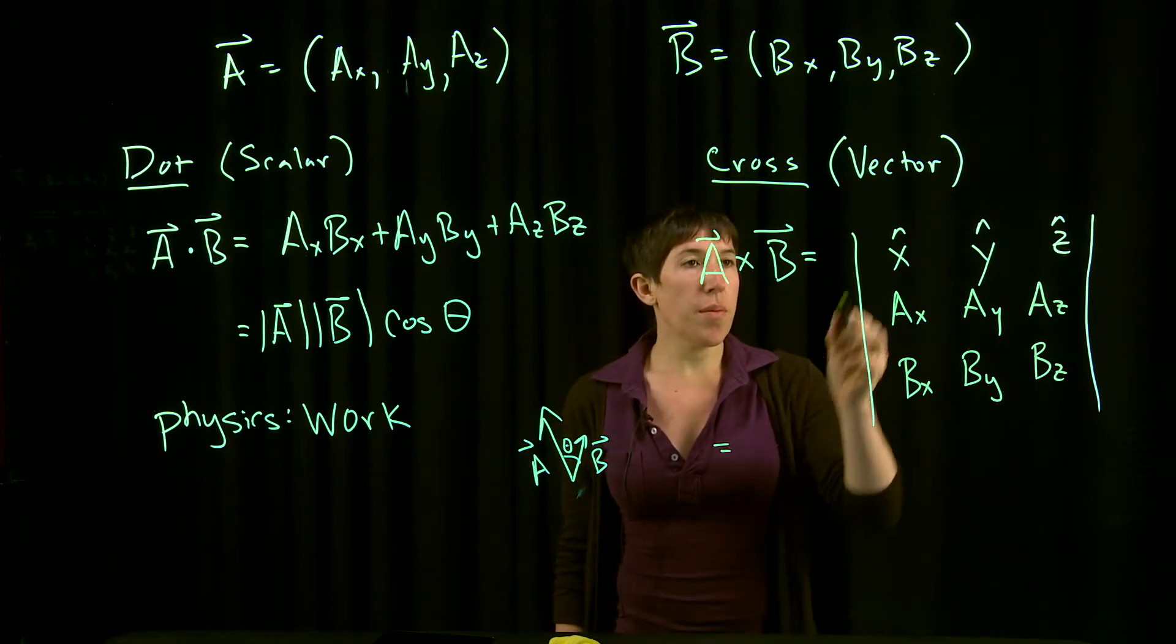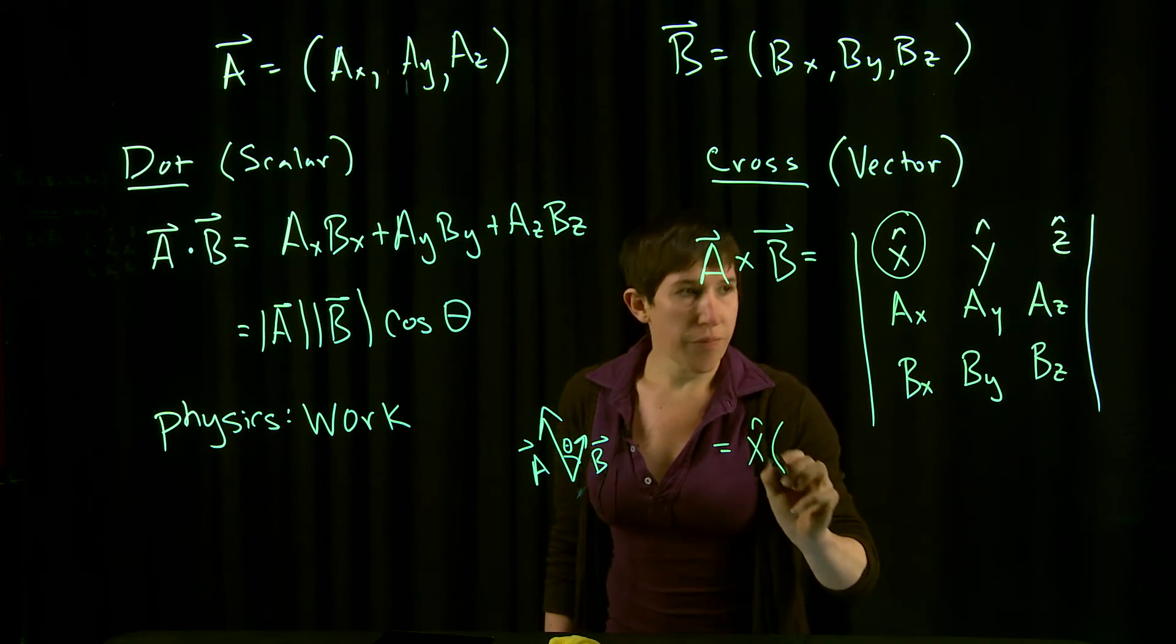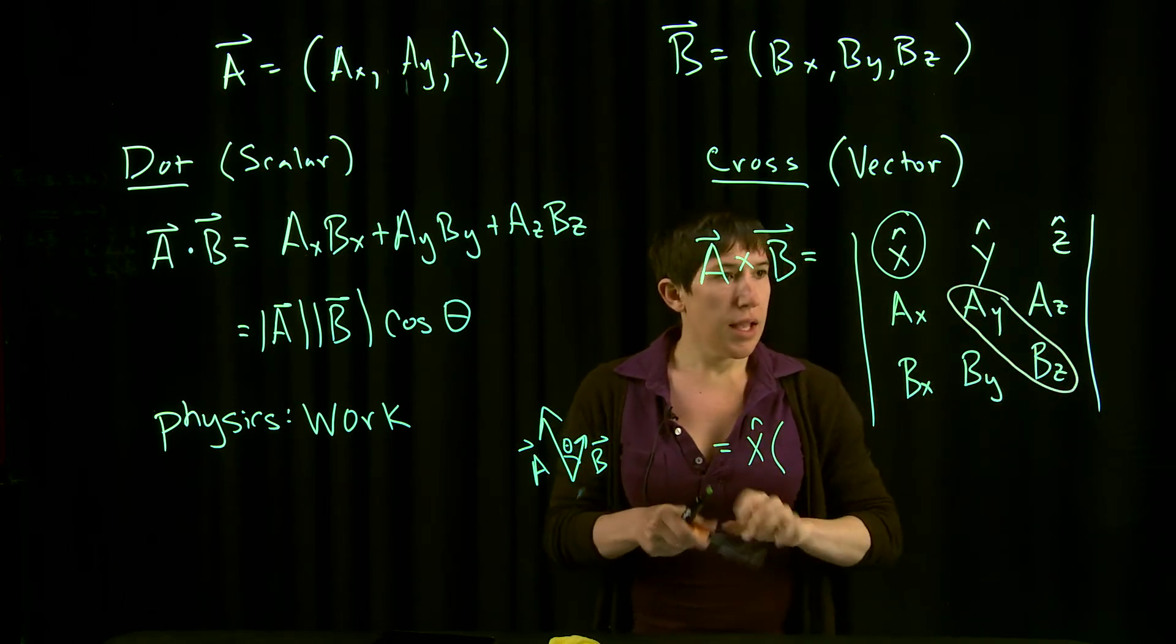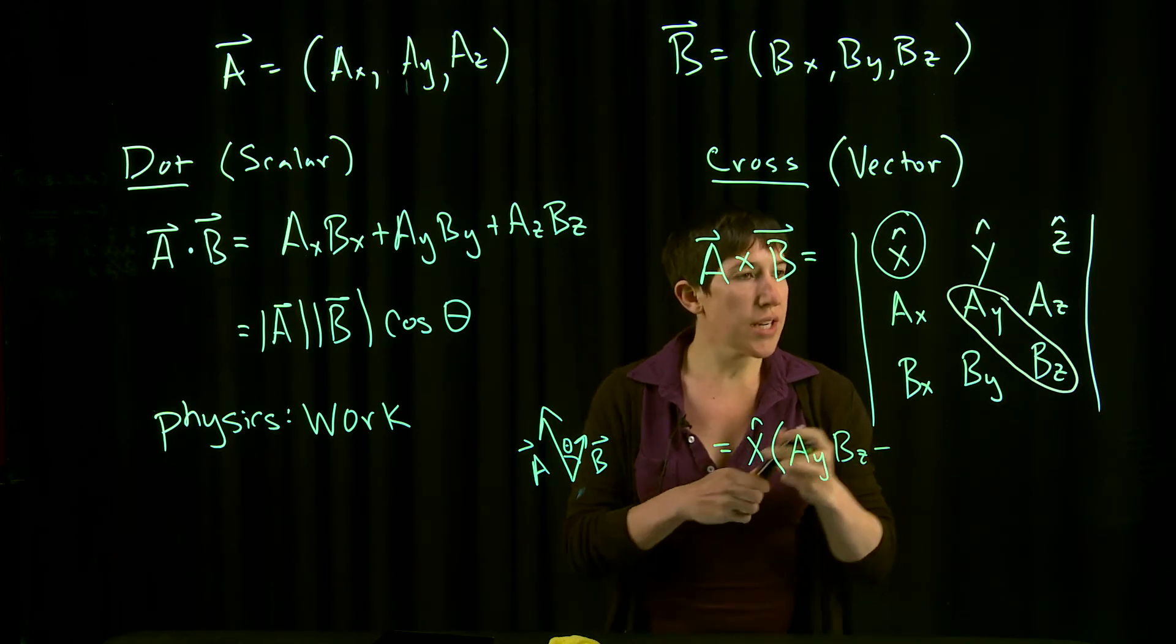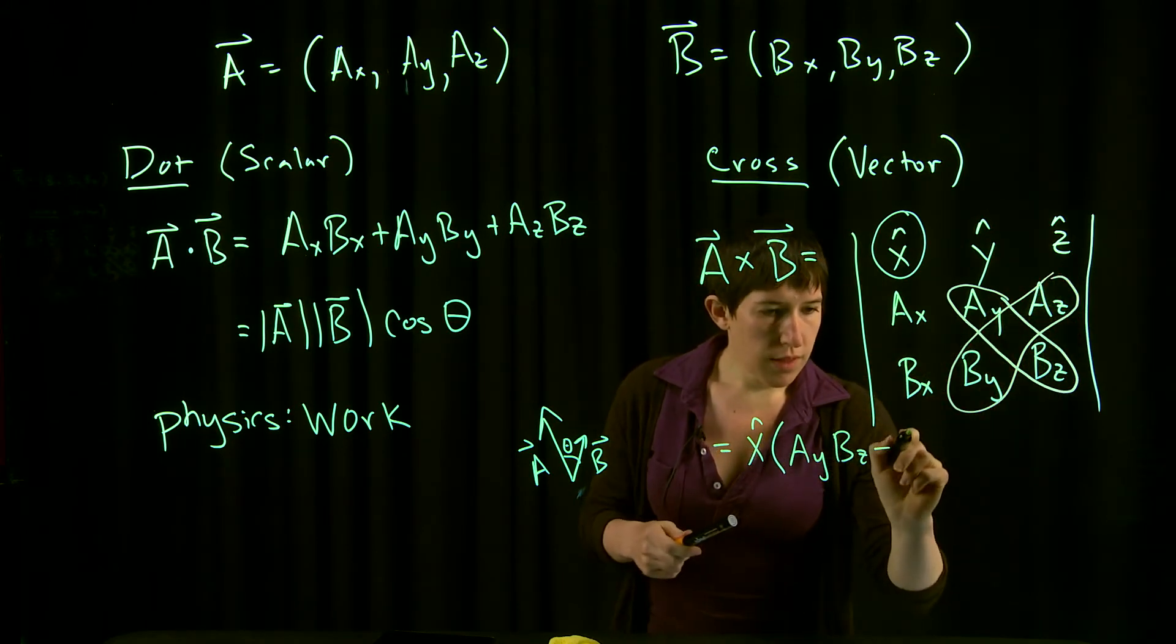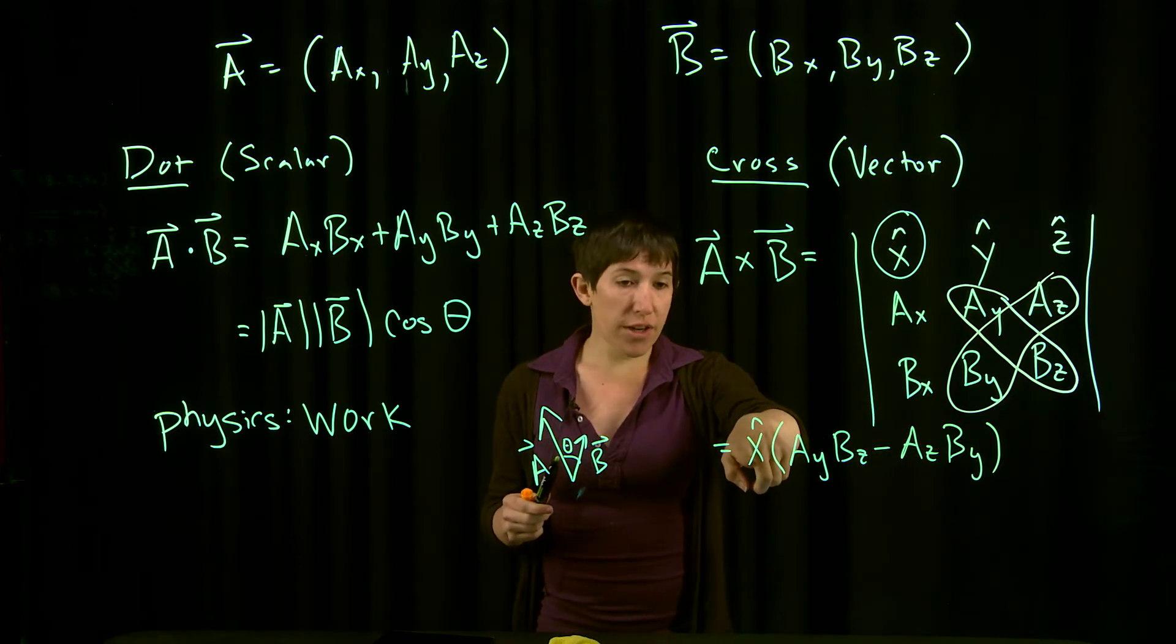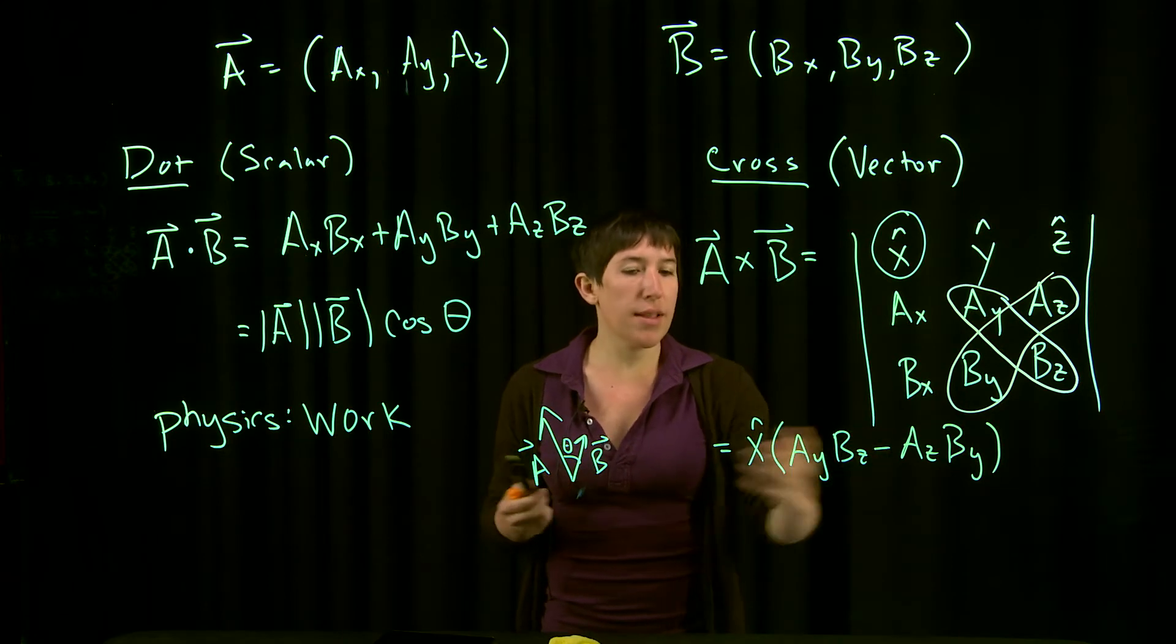To compute the determinant, the first term is x-hat times (Ay*Bz - Az*By). What you'll notice is the components in the new vector's x direction don't involve any of the original x components—they involve the y and z components.